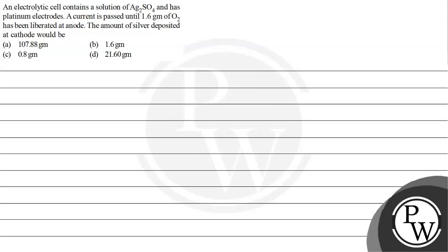Hello Bachchan, let's see the question. The question says an electrolytic cell contains solution of Ag2SO4 and has platinum electrode. The current is passed until 1.6 gram of O2 has been liberated at anode. So the amount of silver deposited at the cathode would be.